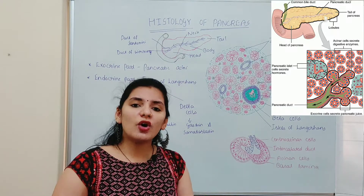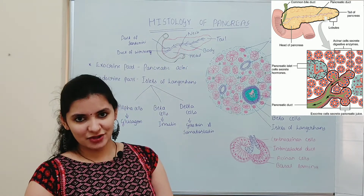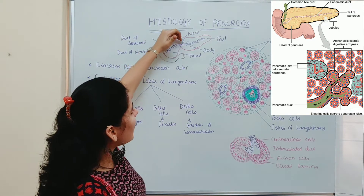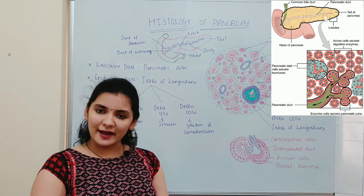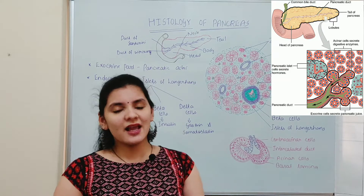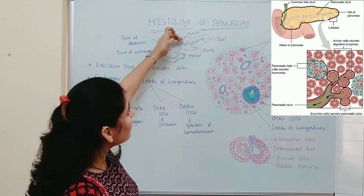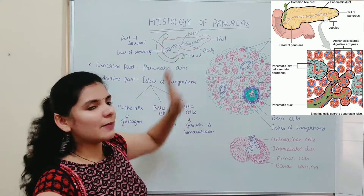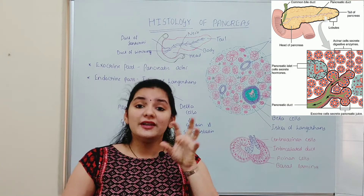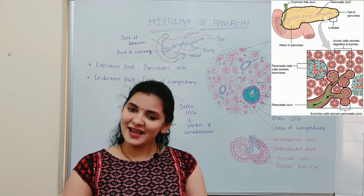As with other organs or glands, the pancreas is also covered by a thin layer of connective tissue. This thin layer sends septa or trabeculae into the parenchyma part of the pancreas — meaning the tissue present inside the organ — which divides the pancreas into many lobules. Each lobule consists of different kinds of cells, which is what we are going to study in this video.